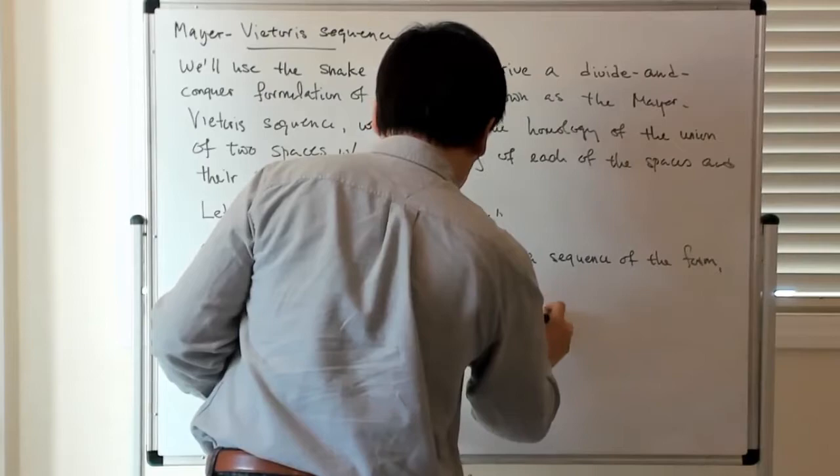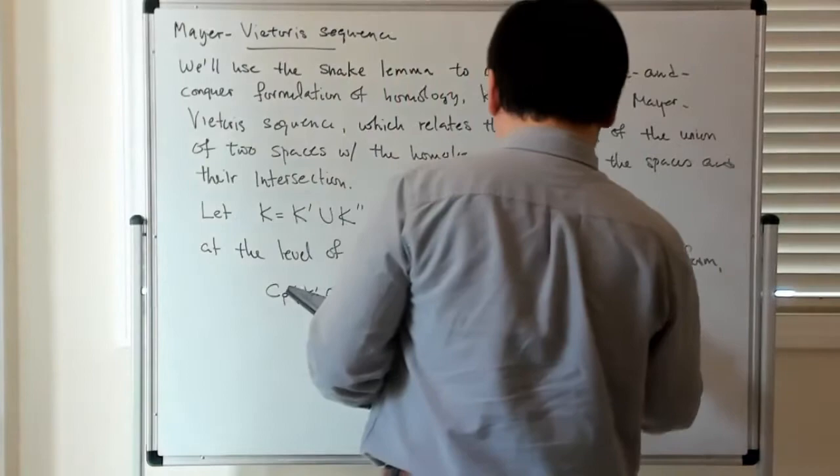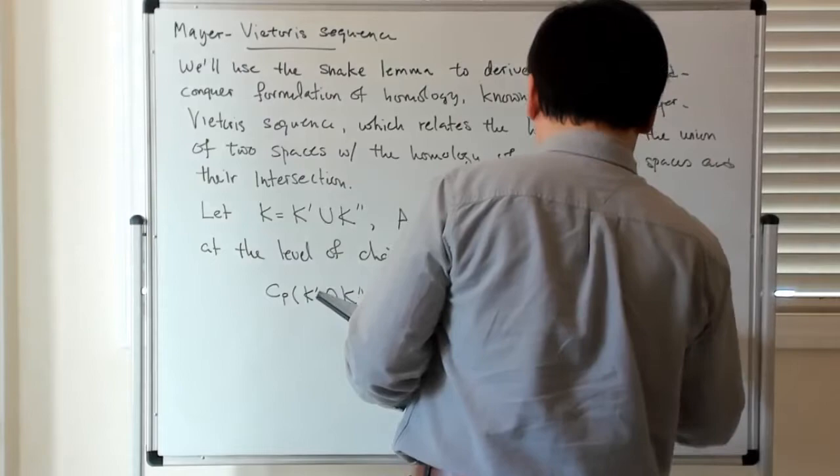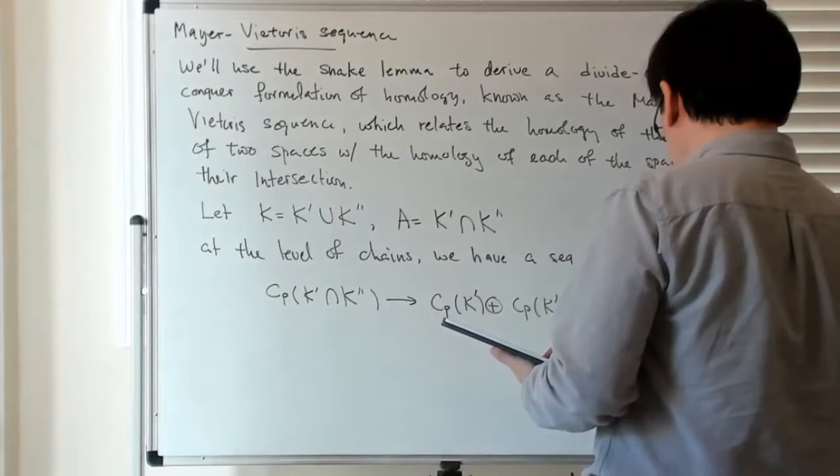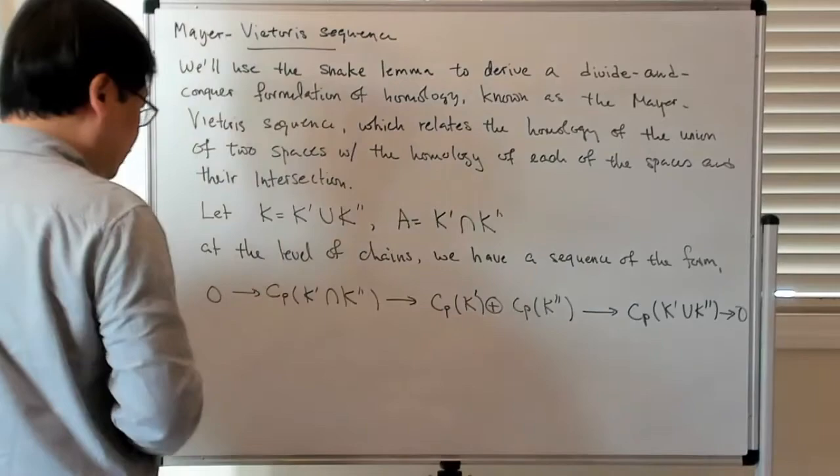C_p of K prime direct sum C_p of K double prime, and that gets mapped to C_p of K prime union K double prime. So the claim is that this is a short exact sequence.